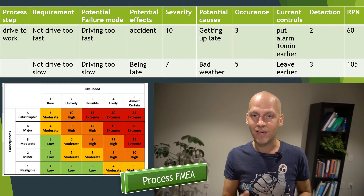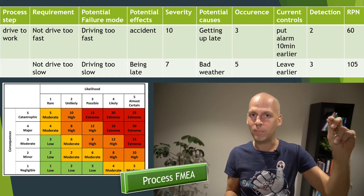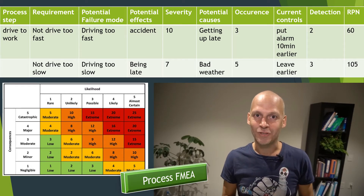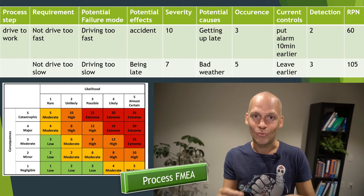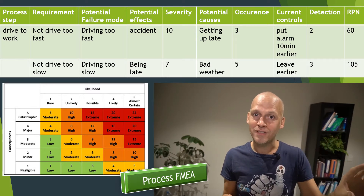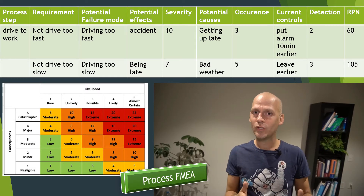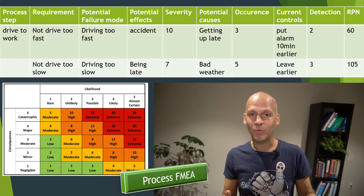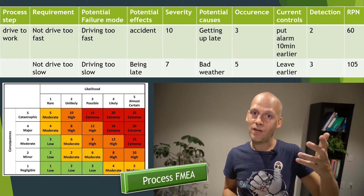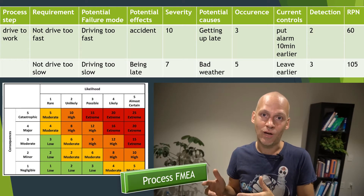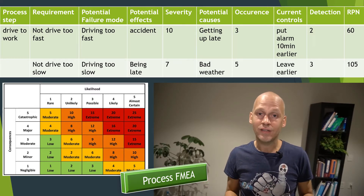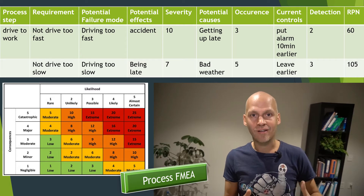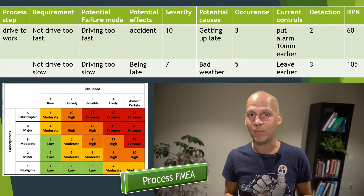If it were a production process, like baking a pizza, you could say: I prepare the dough, I put the toppings on, I put it in the oven, I sell it — that would be your process. But in my example I keep it simple and just say driving to work as my first process step. Then I ask myself, what is the requirement for this process? I would say I should not drive too fast and I should not drive too slow, because things could go wrong in either case. So those are my requirements.